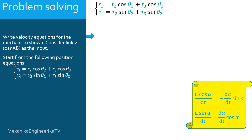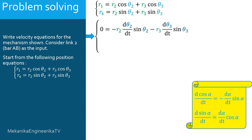Let's consider the first equation. R1 is constant, thus its time derivative is 0. The time derivative of R2 cosine theta 2 is equal to minus R2 times d theta 2/dt times sine theta 2. And the time derivative of R3 cosine theta 3 is equal to minus R3 times d theta 3/dt times sine theta 3.